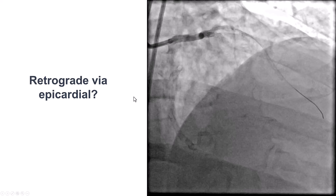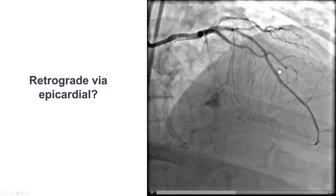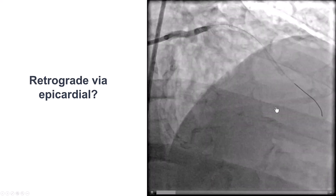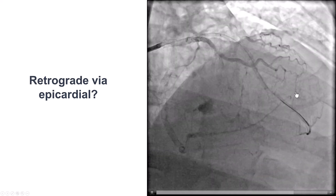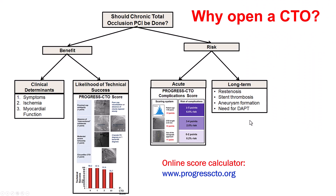We then discussed the potential option of going retrograde through a very small epicardial collateral that wraps around and then goes into the posterolateral. We debated about whether we should go through this vessel, but it was very small with significant tortuosity. We did not think that the potential risks of going through this collateral outweighed the potential benefits in terms of symptom improvement. This risk-benefit assessment should happen before every CTO-PCI, but also should be a dynamic process throughout the procedure. In our case, going through septals had an acceptable risk, but switching strategy to go through epicardials changes the risk, which changes the risk-benefit ratio.